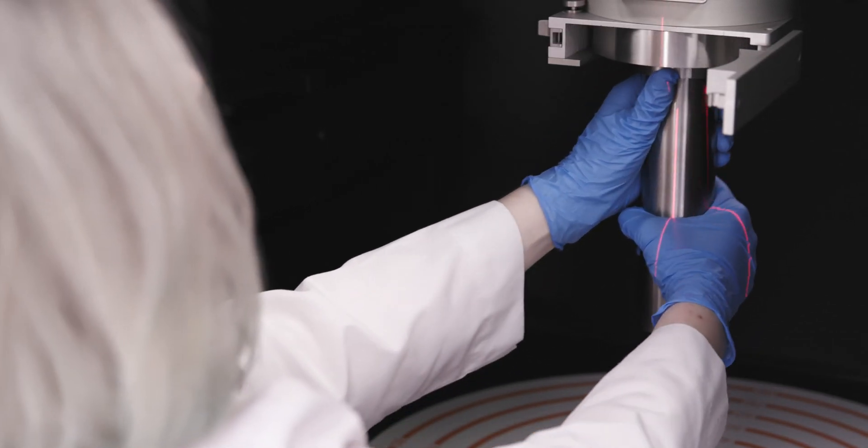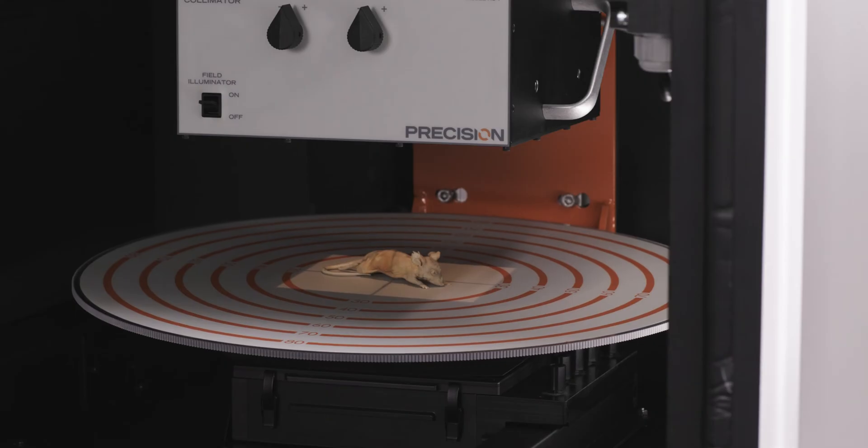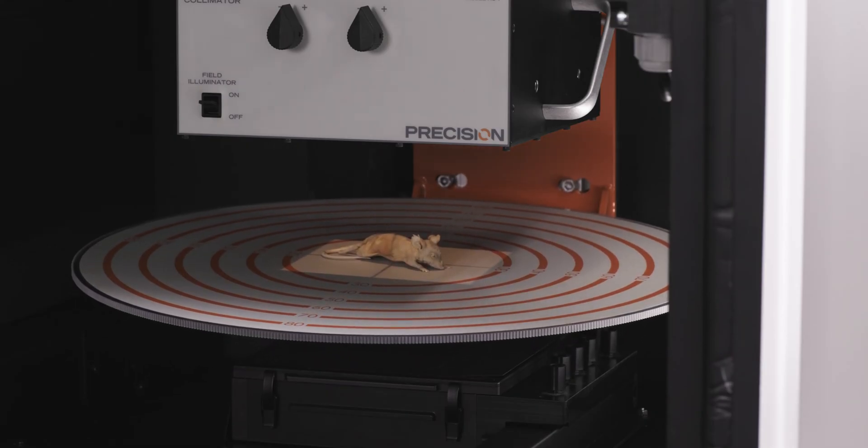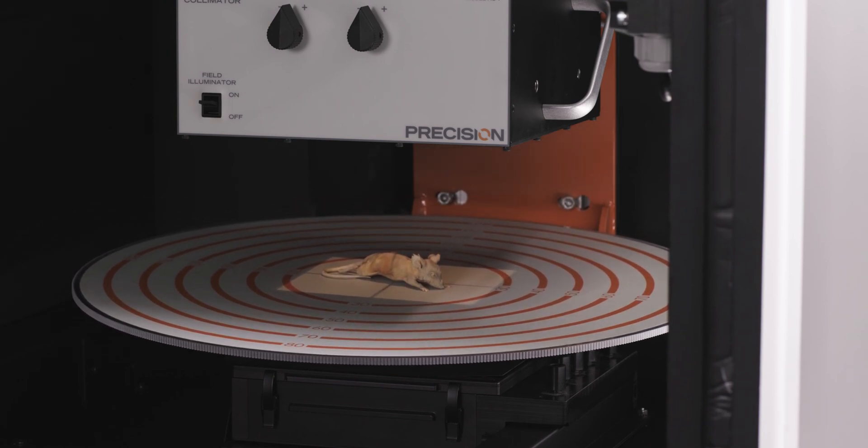Collimation, either fixed or dynamic, allows users to define the exposure field size. This enables targeting through beam narrowing and allows for precise dosing to specific body areas while minimizing radiation dose to healthy tissue.